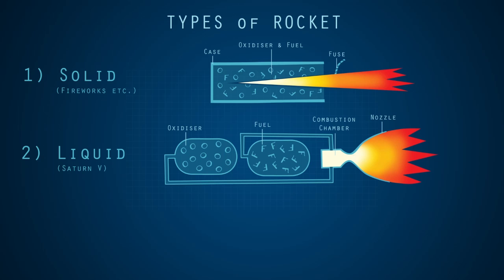The rate at which the liquids are pumped can be varied to alter the amount of thrust, and it can even be shut off altogether. But if these liquids accidentally made contact outside of the combustion chamber, they could cause an explosion.